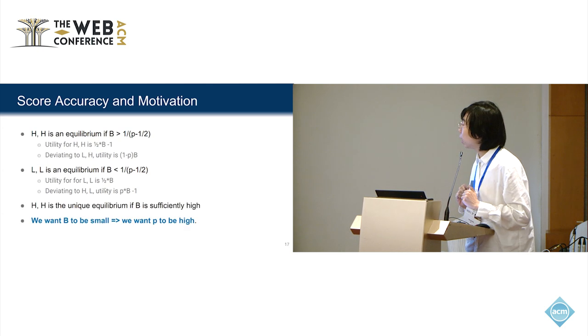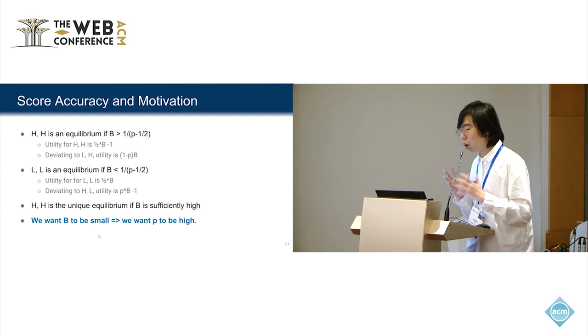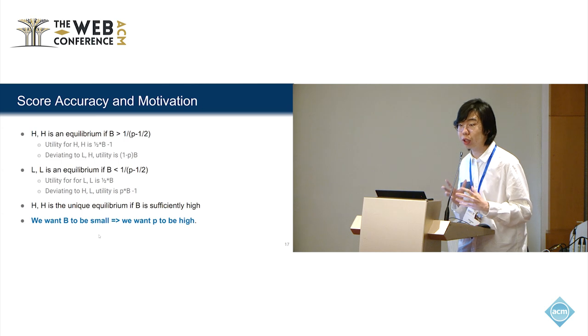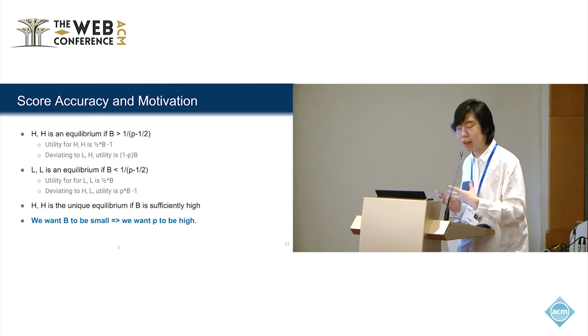We can see that if we make b sufficiently high, we can make high effort a unique equilibrium, which is what we want in crowdsourcing applications. In addition, we want the payment b to be small to save the budget to elicit the effort. Therefore, we need p to be high, and then we can get a lower threshold. Does that make sense?